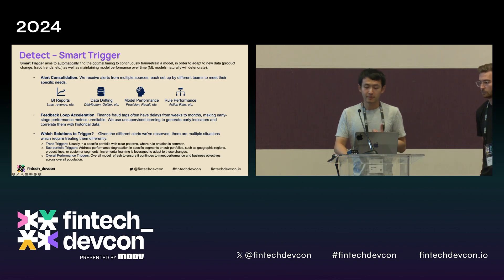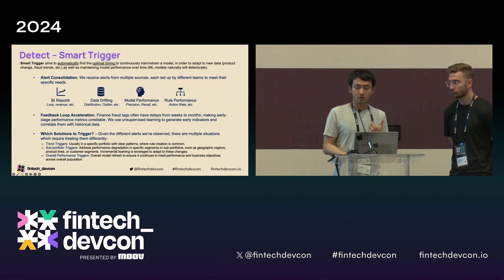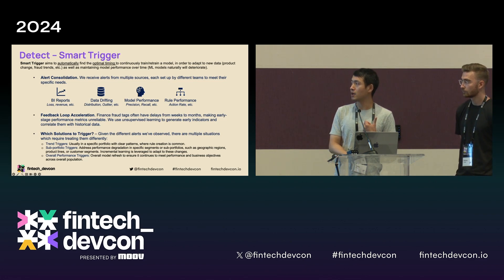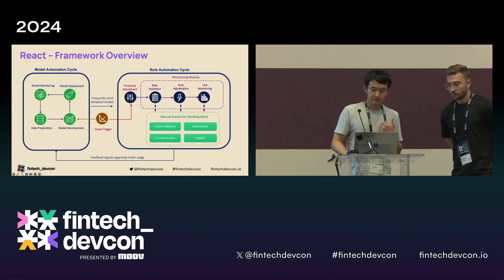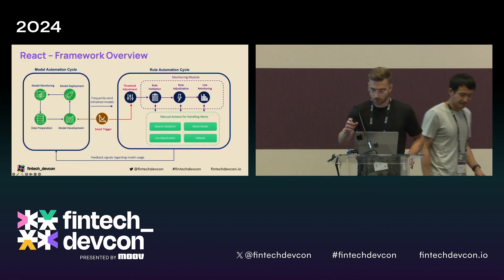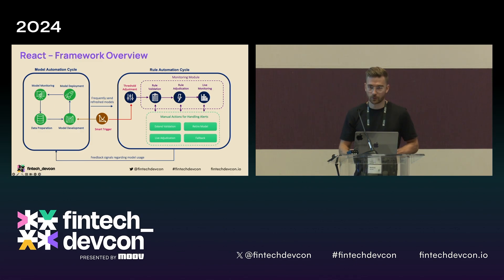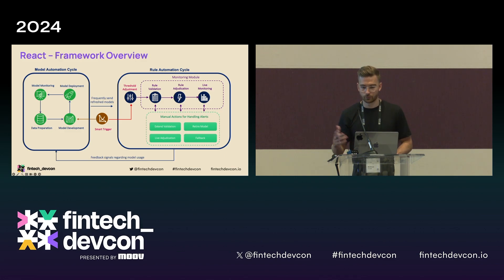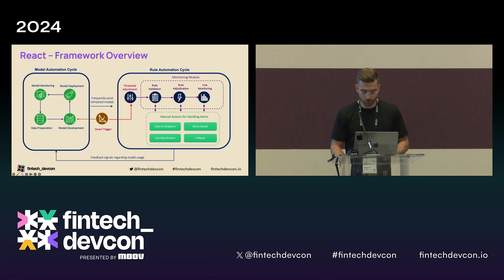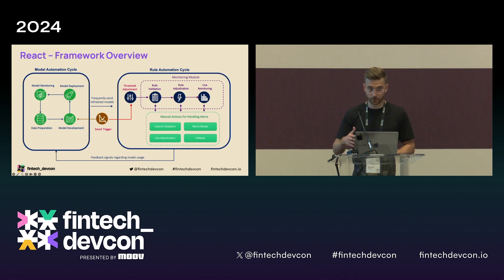I'll now hand it over to my colleague Matt, who will introduce our risk solution playbook and our MLOps capabilities. We just reviewed the Smart Trigger system, which answers the question of when a model should be retrained or rules should be updated. This React section is going to answer the how. We can start with a high-level overview of the framework, which is designed to automatically generate and deploy ML-based solutions in response to detected incoming pressure.